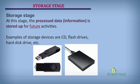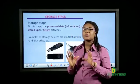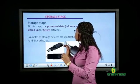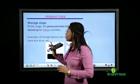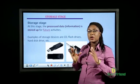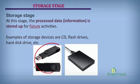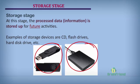Now, the storage stage. After data has been processed, it is saved — stored somewhere for future activities. There are different devices where you store your data. For example, we have the flash drive and the hard drive. At this stage, the processed data, which is information, is stored up for future use.